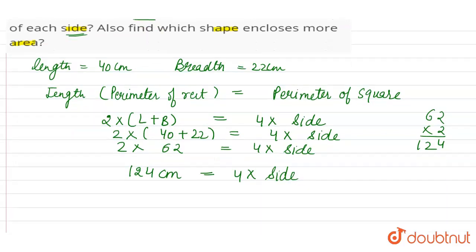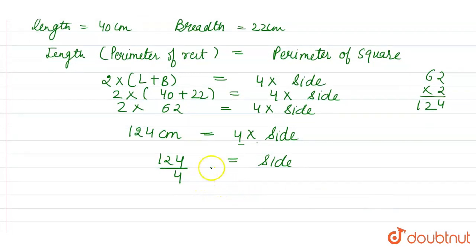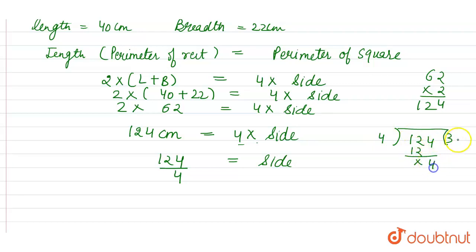Now side will be equals to 124 divided by 4, because 4 is in multiplication on the right hand side, so it will be division on the left hand side. We know 4 into 31 is 124, so the side of the square is 31 cm.